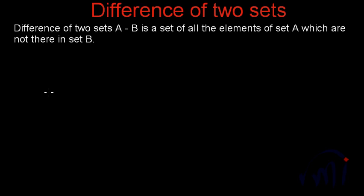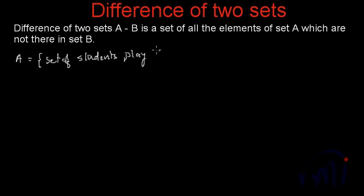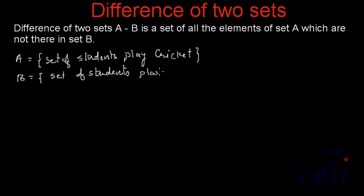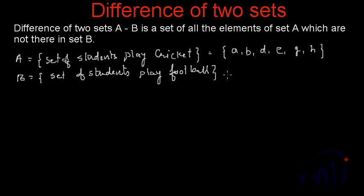Suppose we have a set A which is the set of students who play cricket, and a set B which is the set of students who play football. In set A we have players like A, B, D, E, G and H. And in set B we have players like C, D, F, G, I and K.